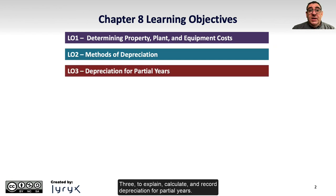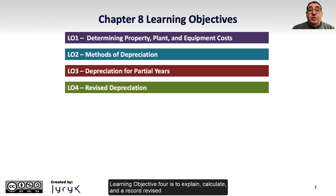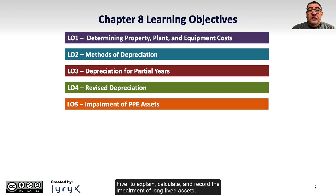Learning Objective 3 is to explain, calculate, and record depreciation for partial years. Learning Objective 4 is to explain, calculate, and record revised depreciation for subsequent capital expenditures. Learning Objective 5 is to explain, calculate, and record the impairment of long-lived assets.